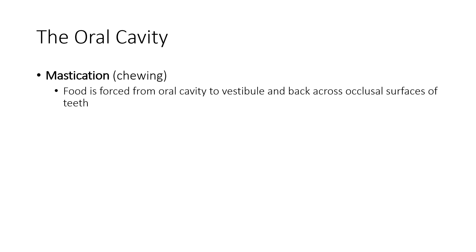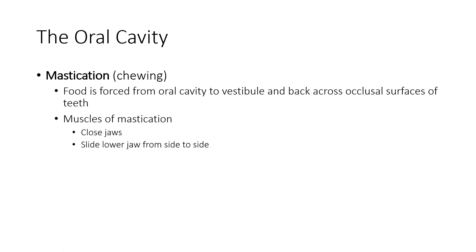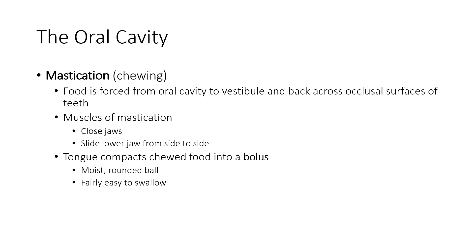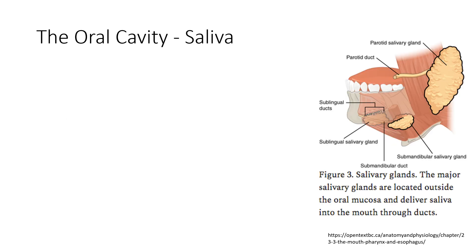Mastication, which is chewing — food is forced from the oral cavity to the vestibule and back across the occlusal surfaces of the teeth. The muscles of mastication close the jaws and slide the lower jaw from side to side. The tongue compacts chewed food into a bolus, which is a moist rounded ball that is fairly easy to swallow.